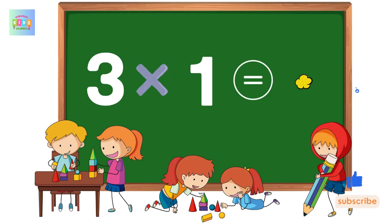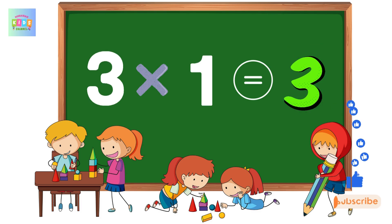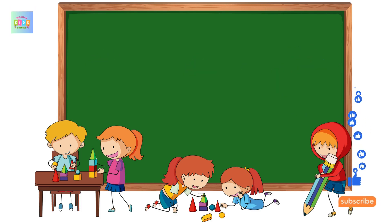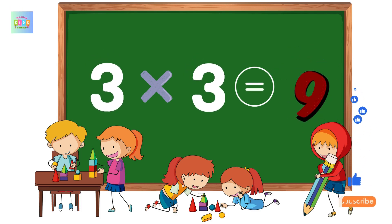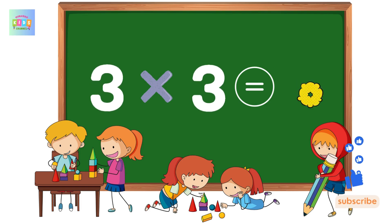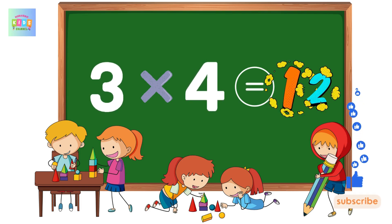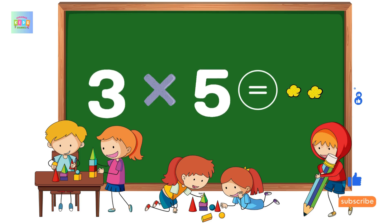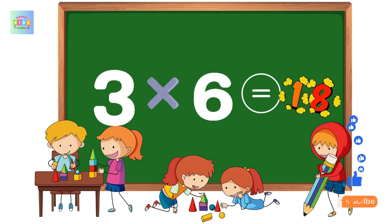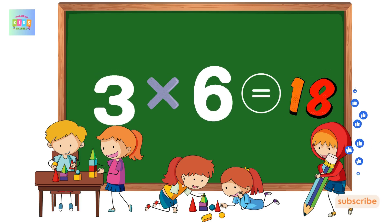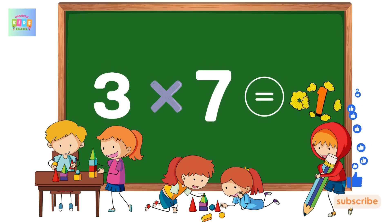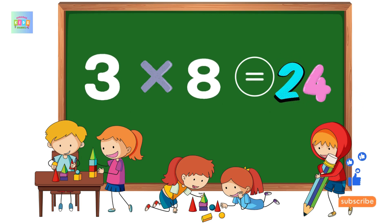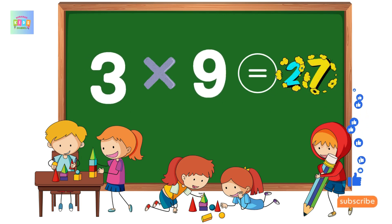Table of 3. 3 1s are 3, 3 2s are 6, 3 3s are 9, 3 4s are 12, 3 5s are 15, 3 6s are 18, 3 7s are 21, 3 8s are 24, 3 9s are 27.